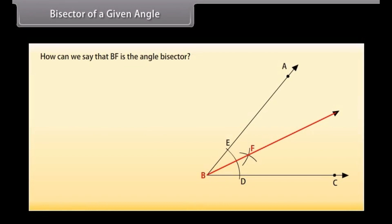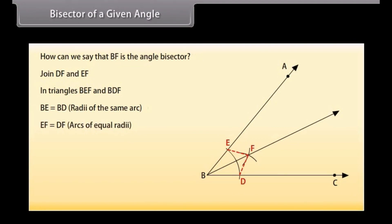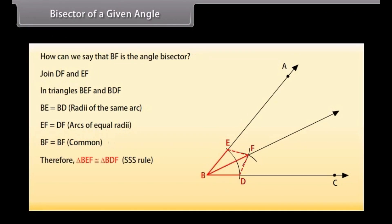How can we say that BF is the angle bisector? Let us prove this. Join DF and EF. Now in triangles BEF and BDF: BE is equal to BD because these are the radii of the same arc; EF is equal to DF because these are arcs of equal radii; BF is equal to BF (common). Therefore, by SSS congruence rule, triangle BEF is congruent to triangle BDF. This gives angle EBF is equal to angle DBF by CPCT. Hence, BF is the angle bisector.